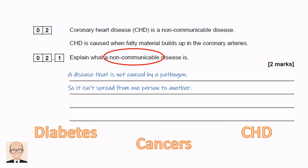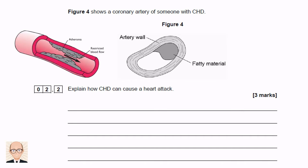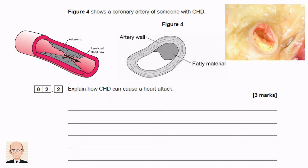This question shows an image of an artery of somebody with coronary heart disease. It asks us to explain how coronary heart disease can cause a heart attack. We can see from the image that the build-up of fatty material on the inside of an artery makes the artery narrower. This second image makes the narrowing clearer to see. The blood flow through this artery is restricted or slowed right down. This photograph shows an actual artery. We can see the yellow fatty material almost halving the width of the artery. So for three marks, we need to describe the fatty material building up on the artery wall, reducing the flow of blood.